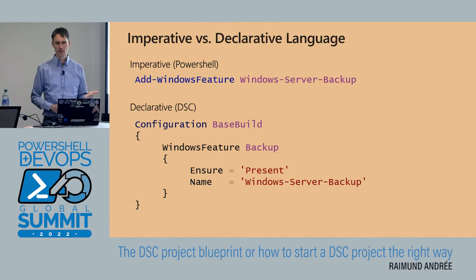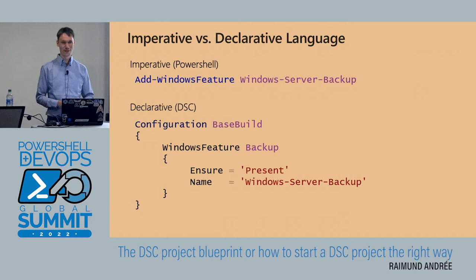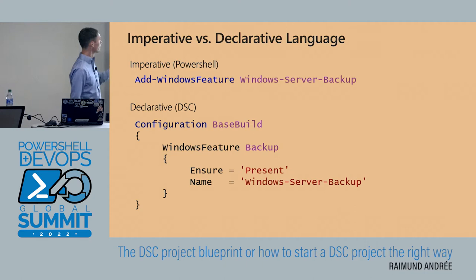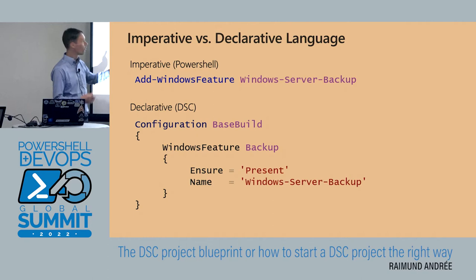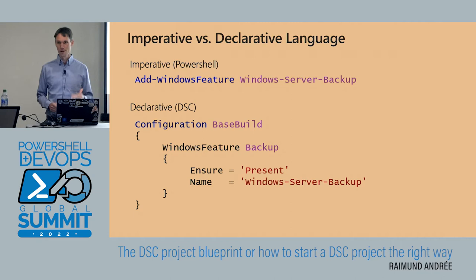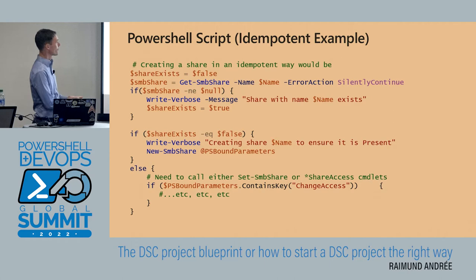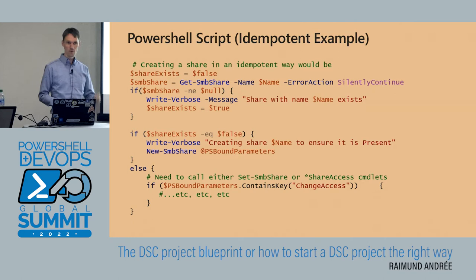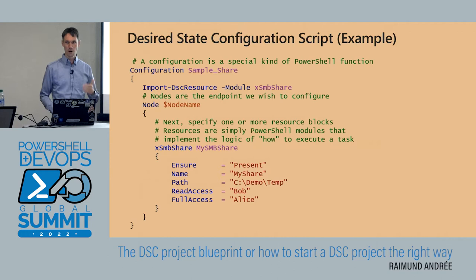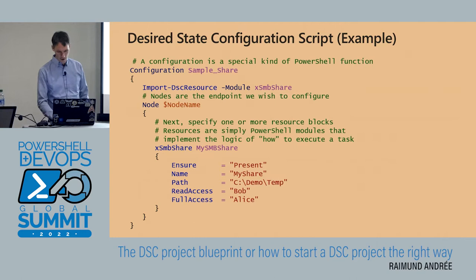Imperative versus declarative — we've heard that a number of times. The declarative way takes more characters and more lines than the imperative way, but only if you're doing your automation in a non-idempotent way. Imagine you want to write a script that implements idempotency by itself — it gets much longer. If you turn that into a DSC configuration, the value of DSC is obvious: it's structured, easy to read, and you don't even need to understand PowerShell flow control, because all the complexity is abstracted by the DSC platform.